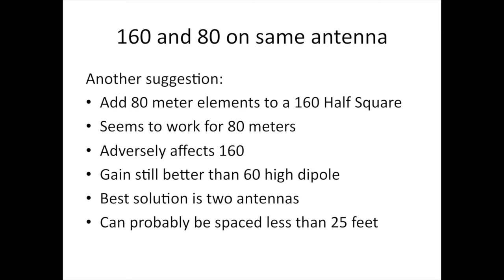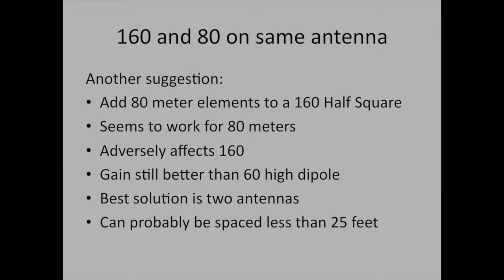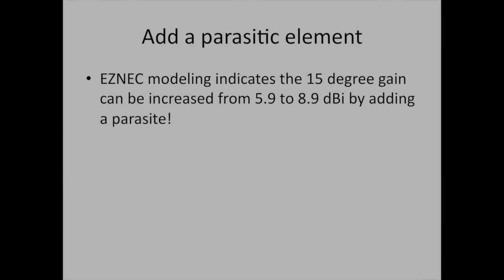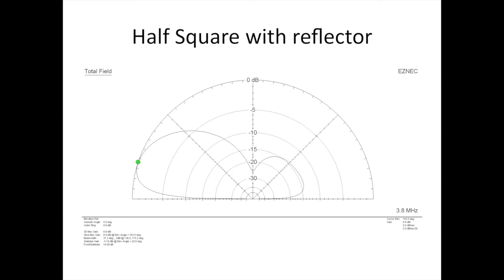Trying 160 and 80 meters on the same antenna? I don't think so. I don't think that's going to work so well. You can add a parasitic element. EZNEC modeling indicates the 15 degree gain can be increased from 5.9 to 8.9 by adding a parasitic reflector. That's a definite possibility. This shows the half square with a reflector. You'll gain in one direction, but you'll lose bi-directivity. It may or may not be worth trying.